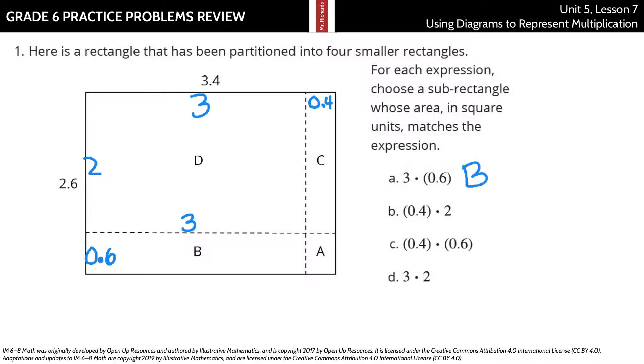What about 0.4 times 2? Here's our 0.4. This side here is 2, and so C is going to represent 0.4 times 2.